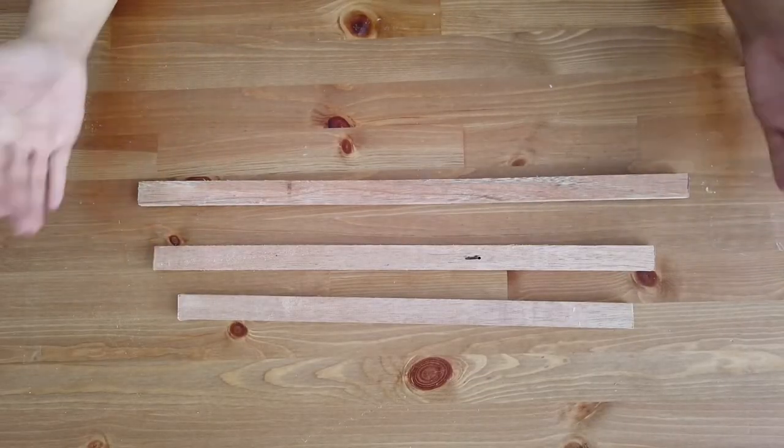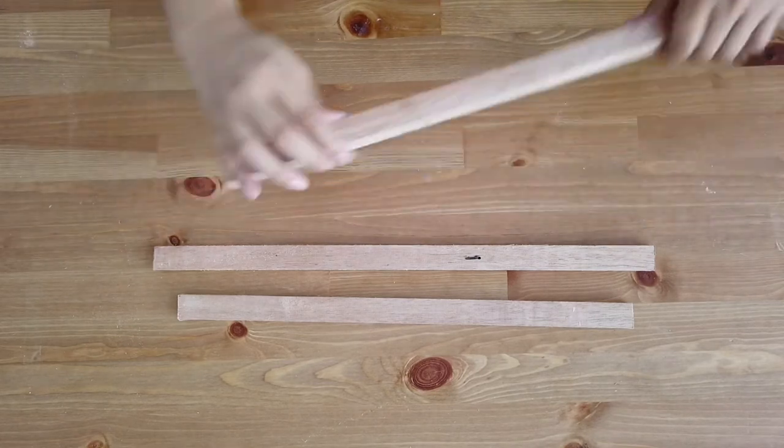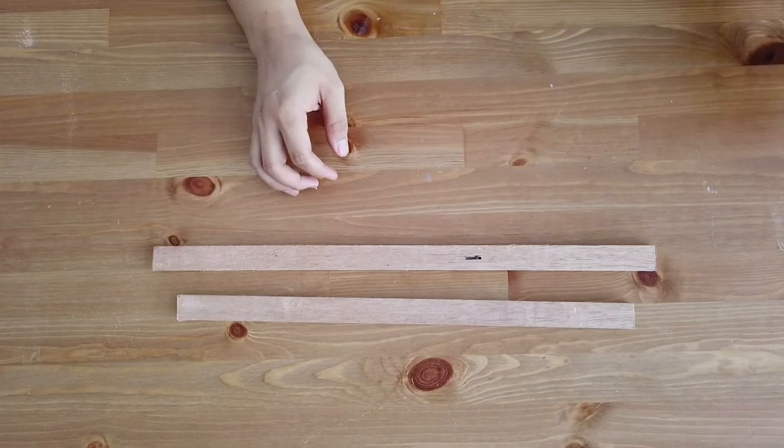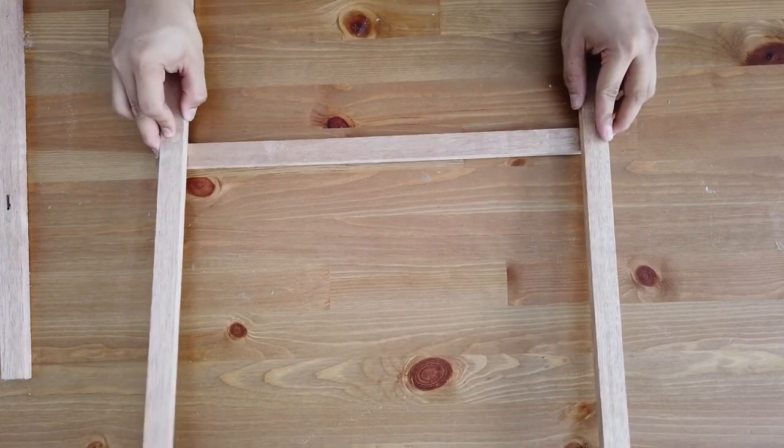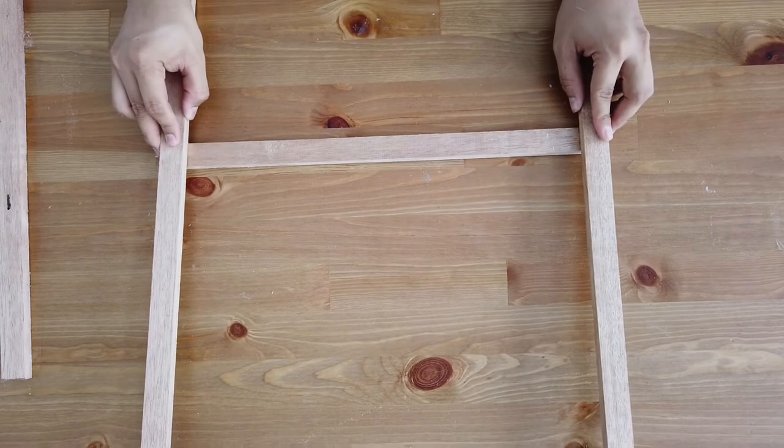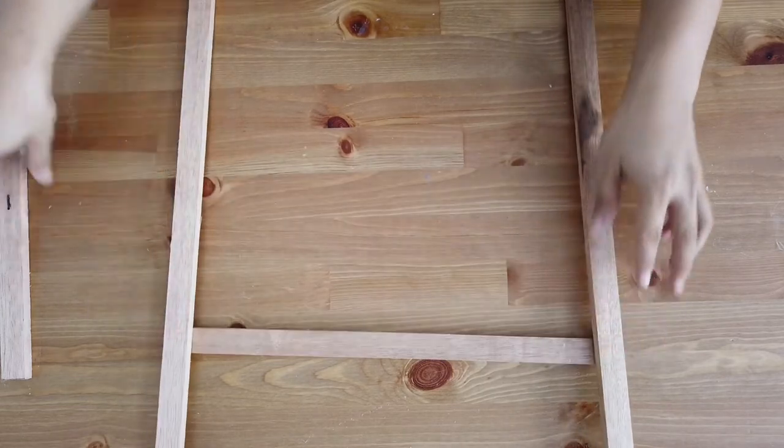And after we have cut them, we are left with these three different sizes: the shortest one, the medium one, and the longest one. So the longest one we'll keep for later. Take the shortest one first and then we're gonna align it with two of the longer wooden sticks. And now you can see that I'm placing the medium one at the bottom. This will create like an A-shape for the easel.